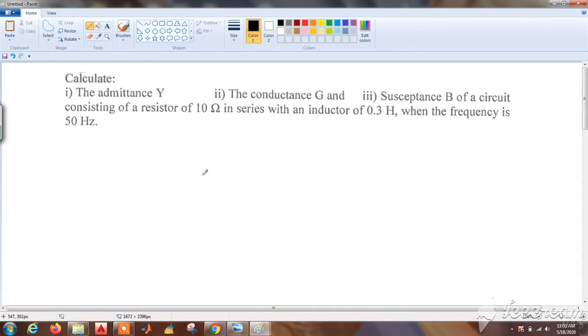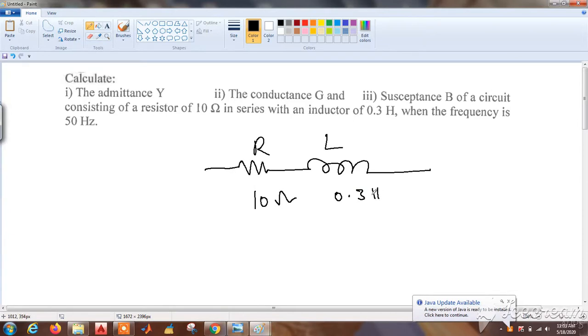First we will draw the circuit. The series RL circuit is given where R is given as 10 ohms and L is given as 0.3 henry.